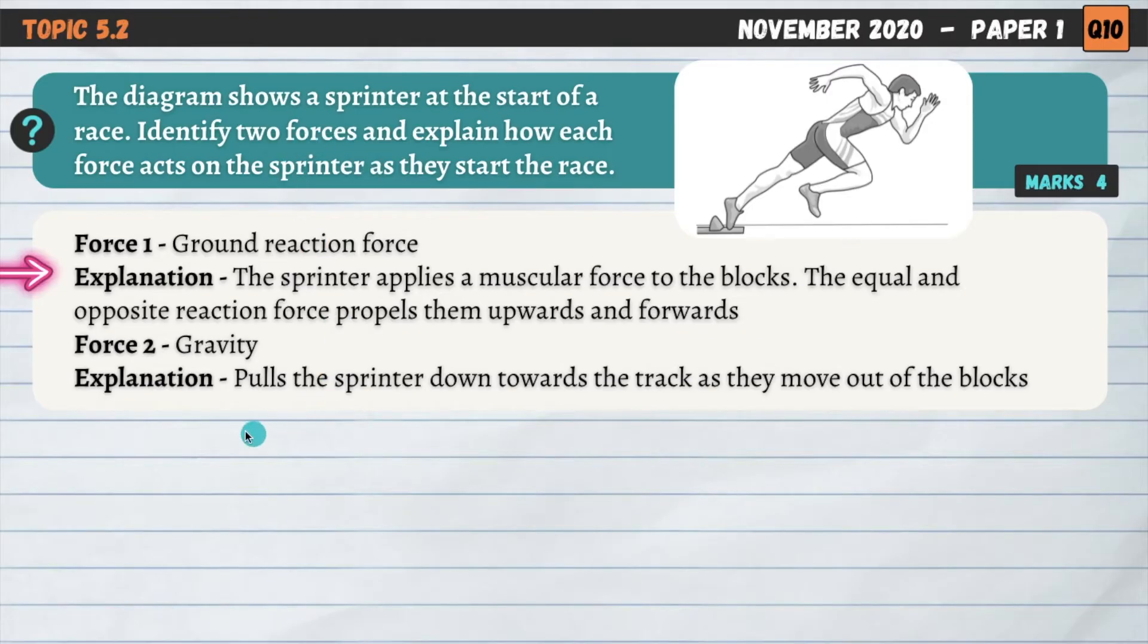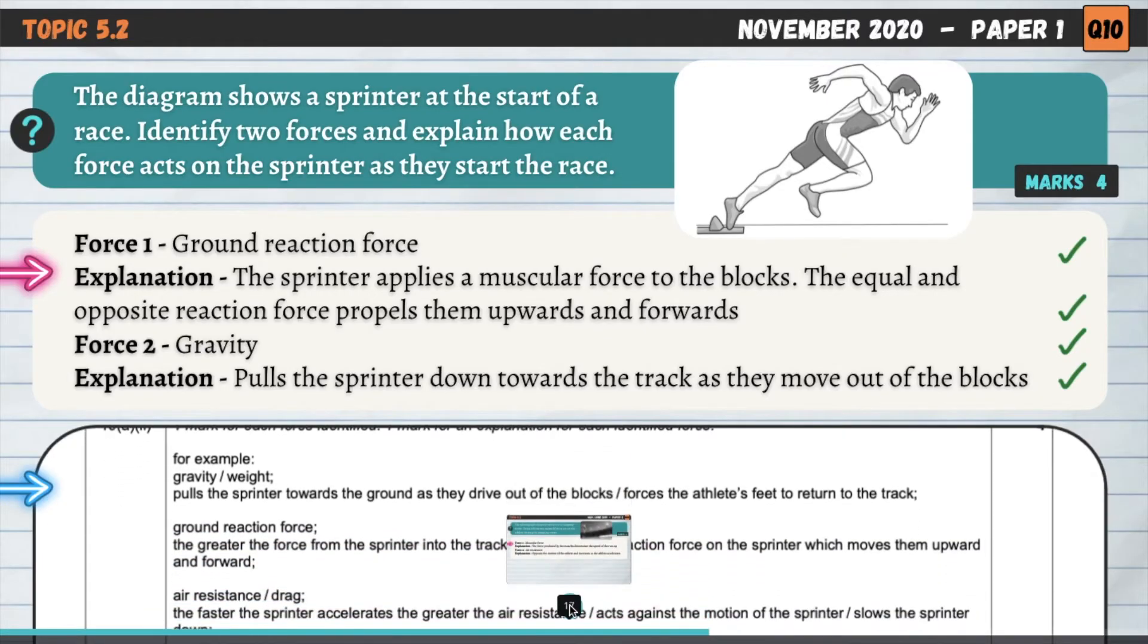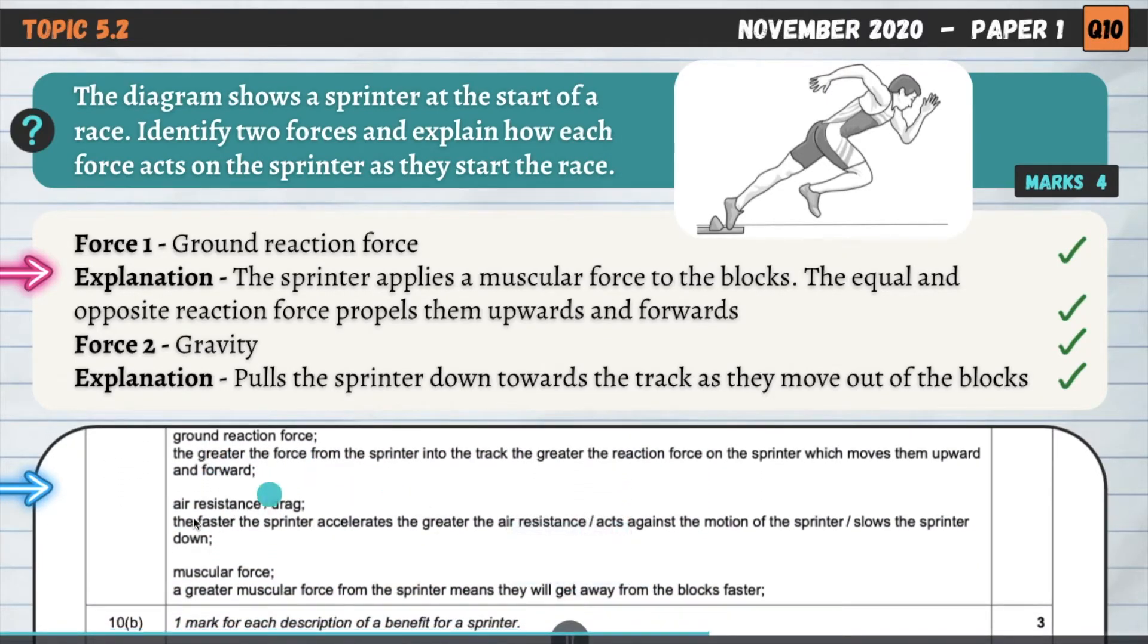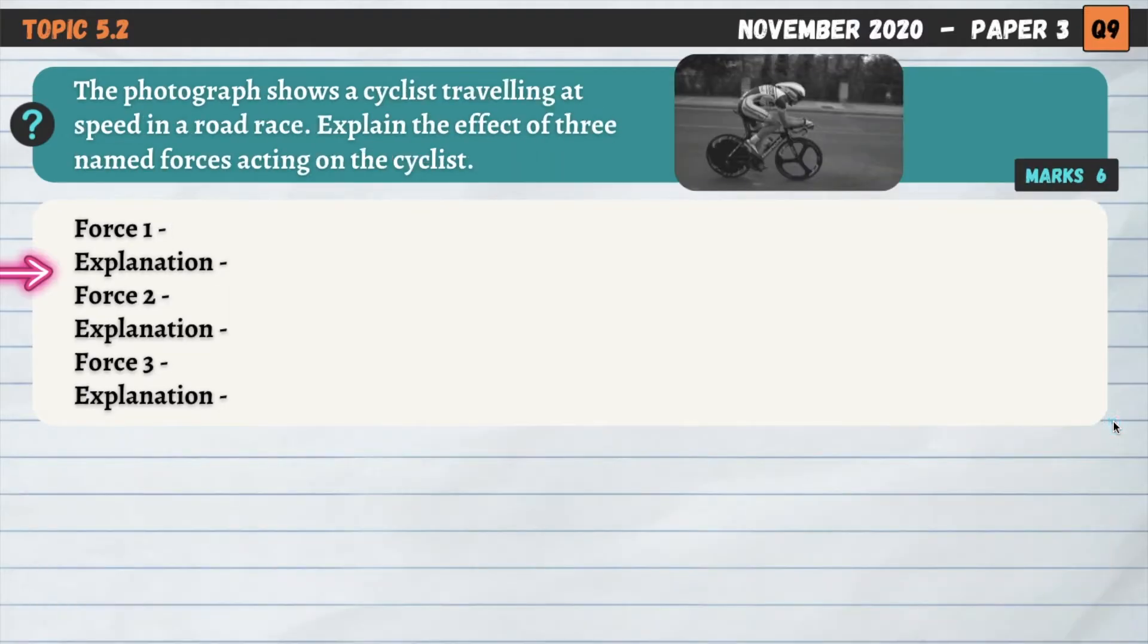Second one is gravity. So how does this influence the sprinter? How does it act upon the sprinter? Well, it pulls them downwards towards the track as they move out of the blocks. So a really simple question, just explaining how some different forces influence the sprinter in different scenarios. And the mark scheme here just confirms that. We've got ground reaction force. We could have gone for air resistance as well. Muscular force was another one that we could have talked about there as well. So similar question to the one previous. As you can see already, it's quite likely that we're going to get a question on something like this in your exam. So it's really important to learn the forces that act on performers in different situations.